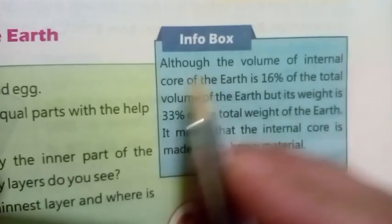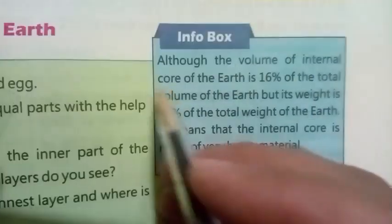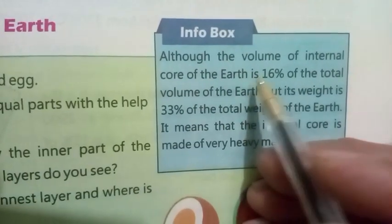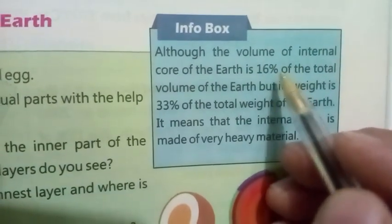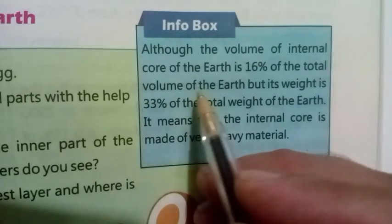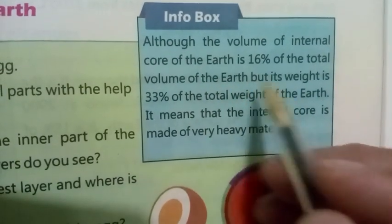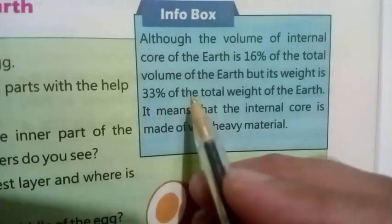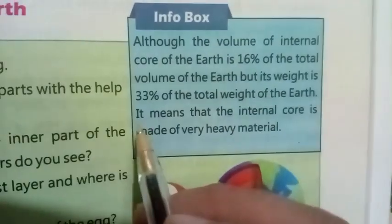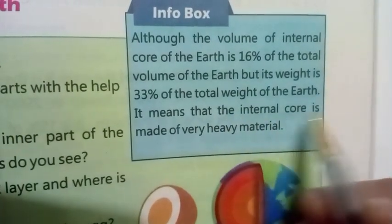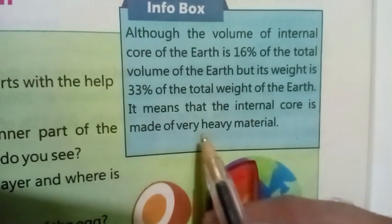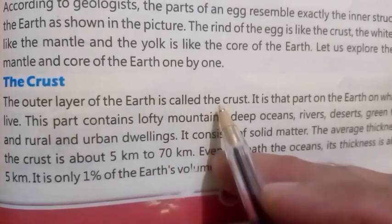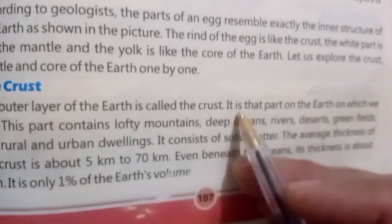Info box: Although the volume of the internal core of the earth is 16 percent of the total volume of the earth, its weight is 33 percent of the total weight of the earth. This means that the internal core is made of very heavy material. The crust: the outer layer of the earth is called the crust.